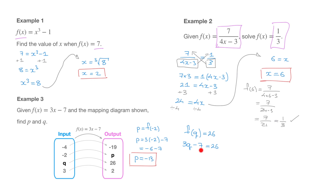We now have an equation for q, so let's solve it. I'll start by getting rid of this 7 that's being subtracted from the left-hand side by adding 7 to both sides. That leads to 3q equals 26 plus 7, which is 33. Finally, we get rid of this 3 multiplying the q by dividing both sides by 3, which gives us q equals 33 divided by 3, which is 11. We've just found the input value which leads to the output 26. That's it for this video on functions.